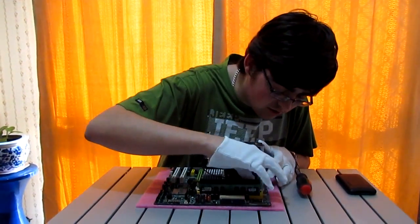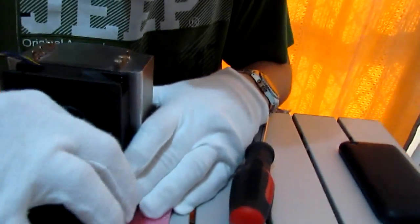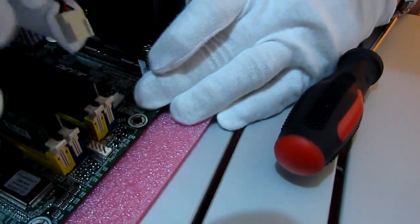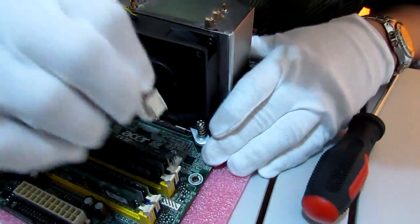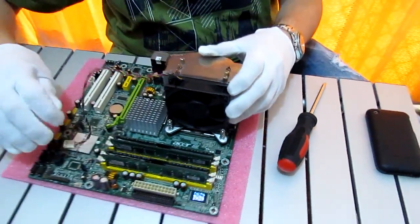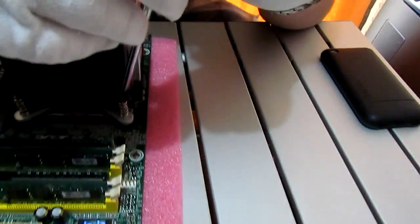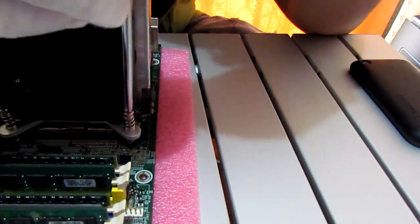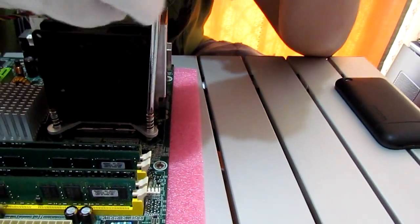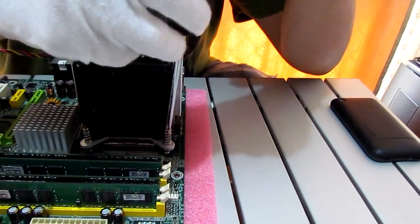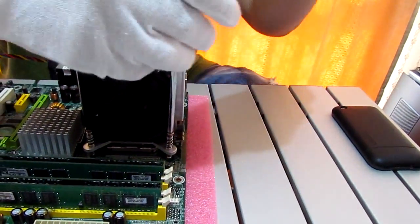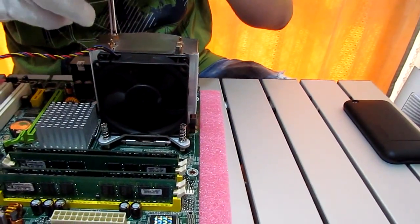So the first thing we're going to do, we're going to disconnect the cooler. If you want to get in close there, just disconnecting the fan header. Now for this particular CPU cooler, it is screwed in, so we've just got our screwdriver over here, we're just going to unhook it off from the board and take it completely off.